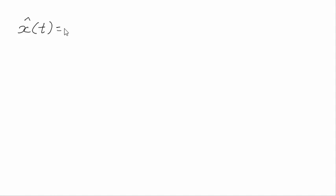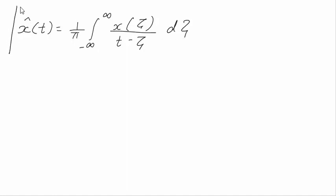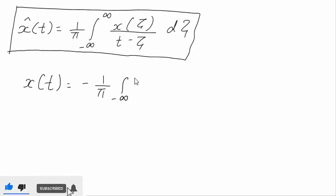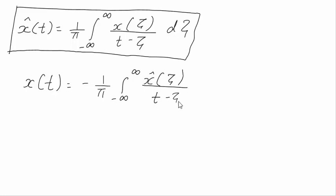We know that the Hilbert transform of x(t) is x̂(t), given by x̂(t) = (1/π) · ∫₋∞^∞ x(τ)/(t − τ) dτ. This is x̂(t), where x̂(t) is the Hilbert transform of x(t). If I want to recover x(t) from x̂(t), it is x(t) = −(1/π) · ∫₋∞^∞ x̂(τ)/(t − τ) dτ. This relation is very important and you have to remember it.